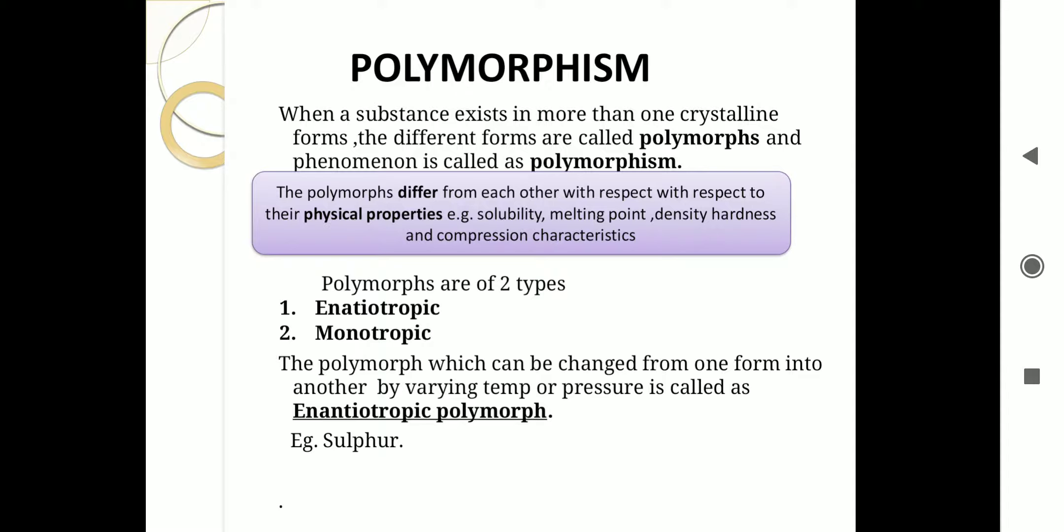Now polymorphs can be of two types. The first category is enantiotropic polymorphs. The polymorphs which can be changed from one form to another by varying the temperature or pressure is called enantiotropic polymorphs. For example, sulfur.